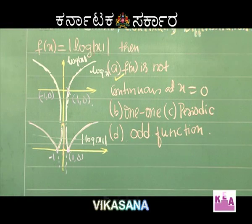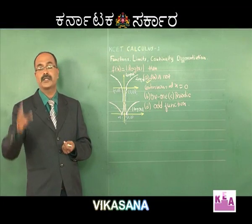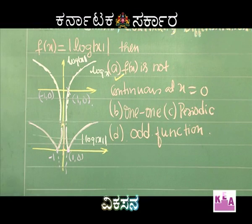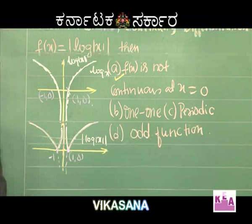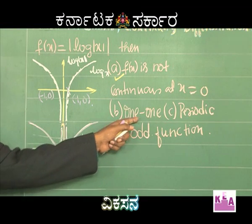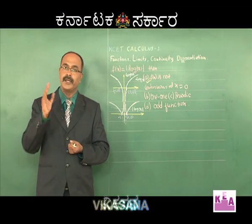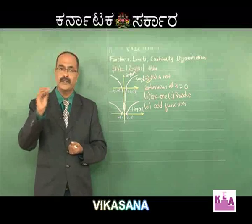Is it periodic? Periodic functions are those which repeat themselves after a certain interval. Very good examples are fractional part of x, sin x, cos x, tan x, |sin x|, |cos x|, e^(fractional part of x), and many more. Looking at the graph, this function is definitely not periodic. It is also not odd. An odd function satisfies f(−x) = −f(x) — for example, sin(−x) = −sin x, and tan(−x) = −tan x.